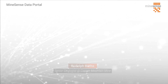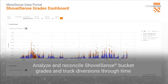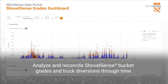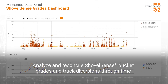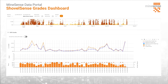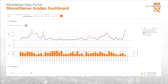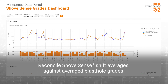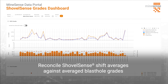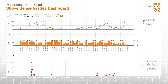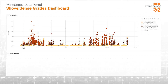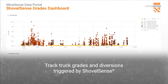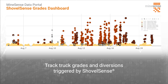The Shovel Sense grades dashboard, primarily used by the geology and mine planning teams, is where the bucket, truck, and shift grades from Shovel Sense can be visualized through time and space and reconciled against the mine estimate grades from the blast hole data. It's also where the number and type of trucks that were diverted with Shovel Sense can be tracked.